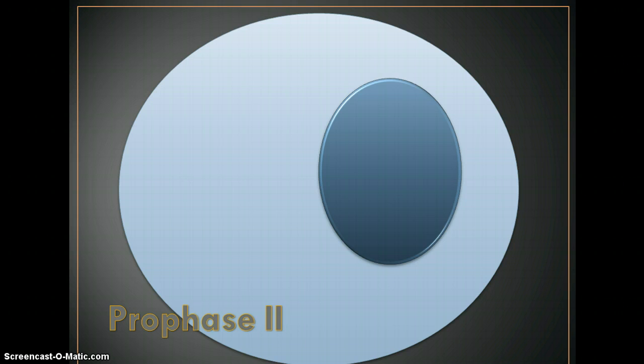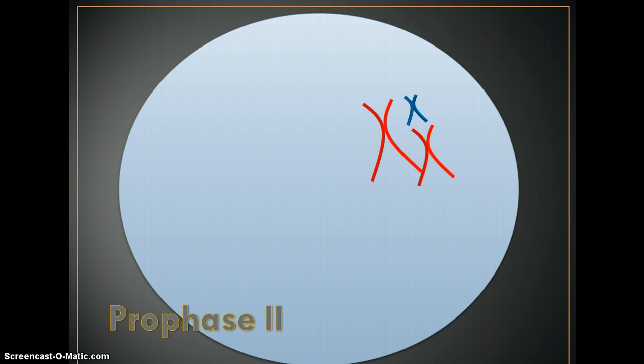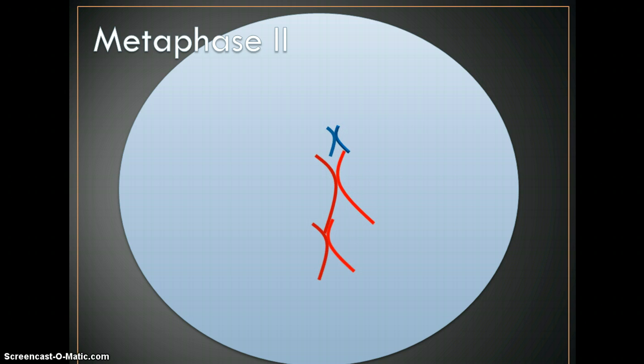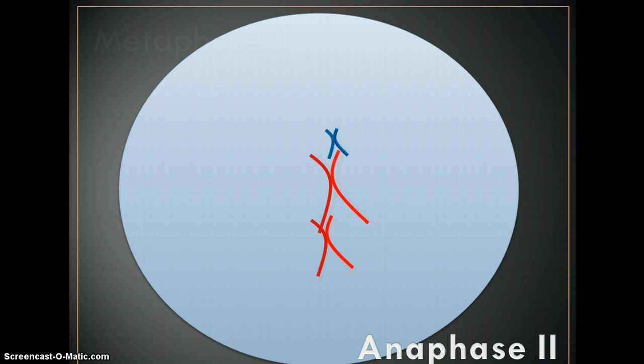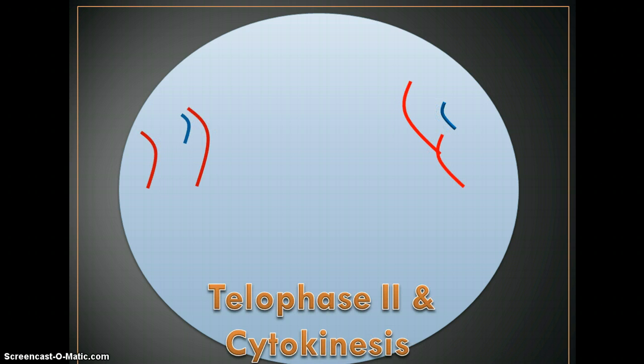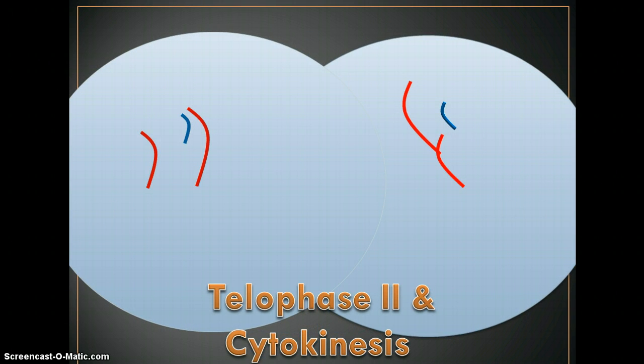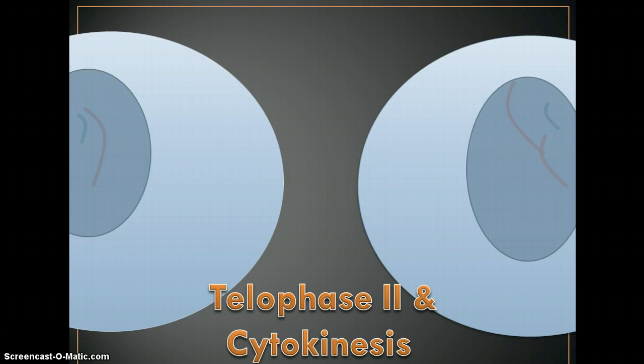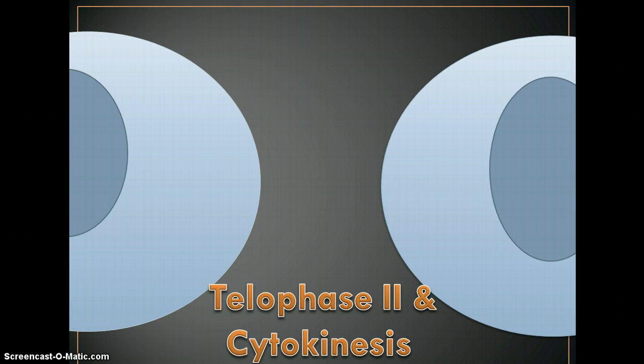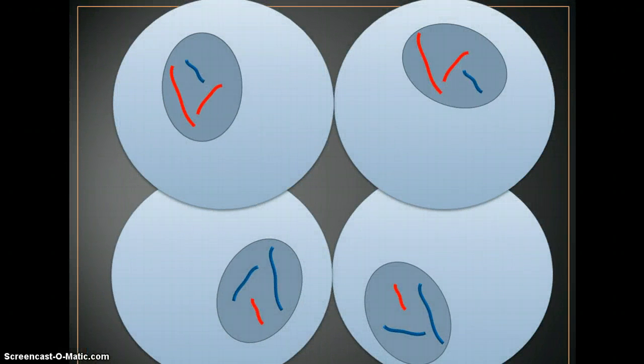In prophase two, the nucleus breaks down and the chromosomes condense. Then we go to metaphase two, where the chromosomes line up on the midplate of the cell. Anaphase two is where sister chromatids are pulled apart. We have telophase two and cytokinesis. So two cells begin to form. And we have the nucleus which reforms and the DNA decondenses.